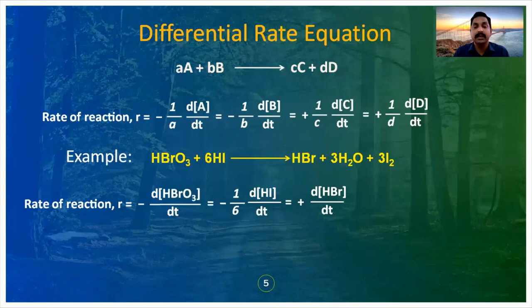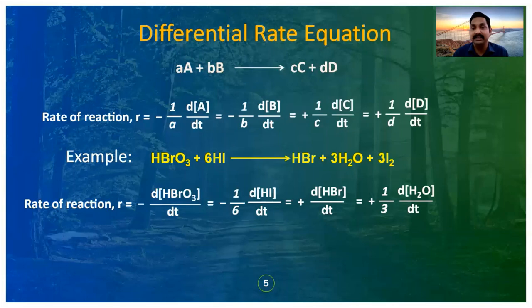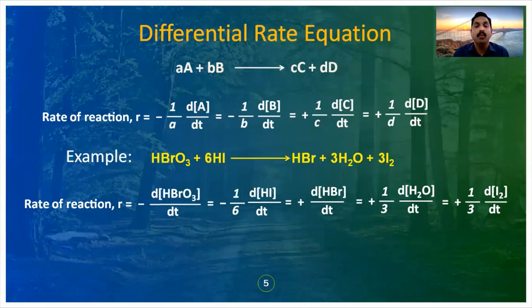For water (3 moles), the rate expression is +(1/3) d[H₂O]/dt. For iodine (3 moles), it is +(1/3) d[I₂]/dt. In all these cases, we divide by the number of moles so we can calculate the rate according to 1 mole — so that all expressions can be equated to each other.